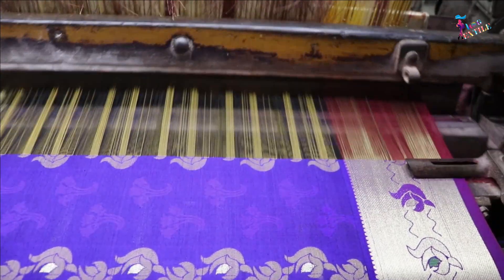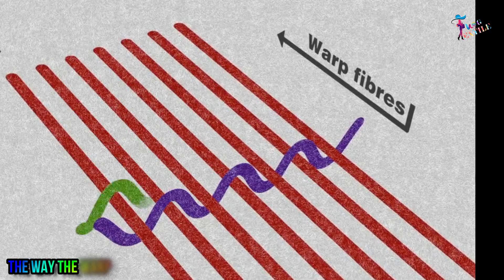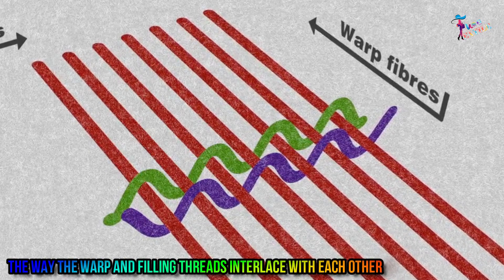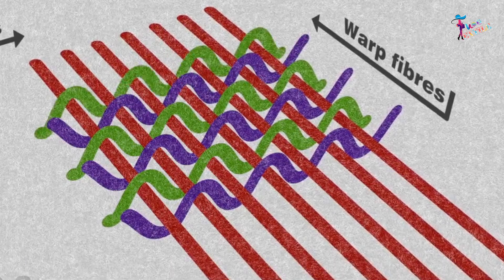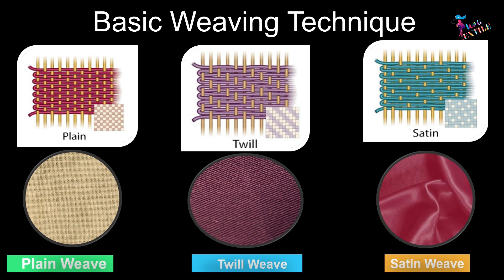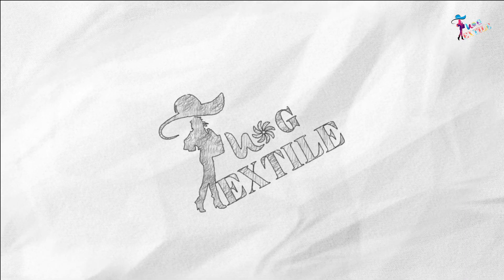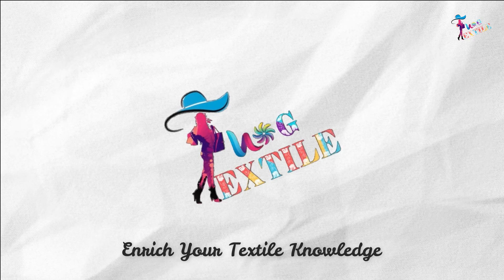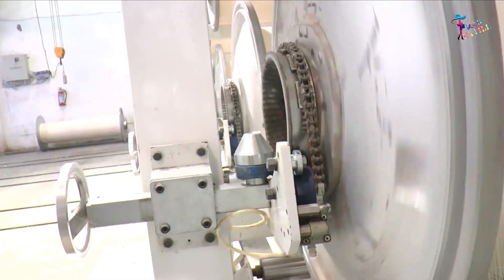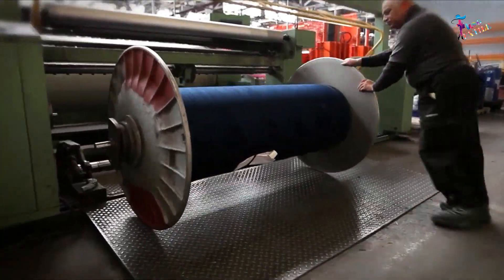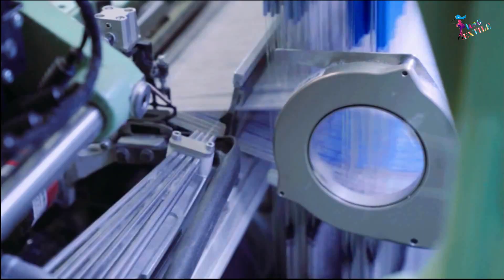Jacquard loom, etc. The way the warp and filling threads interlace with each other is called the weave. The majority of woven products are created with one of three basic weaves: plain weave, satin weave, and twill weave. In this episode, we will explain the textile weaving process step by step.